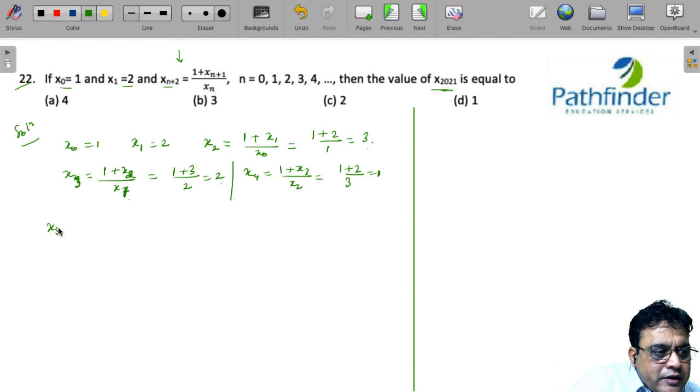Next, x₅ is 1 plus x₄ upon x₃. What is x₄? x₄ is 1. So 1 plus 1 divided by 2, which is 1 again.